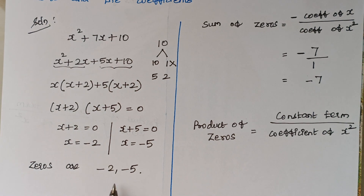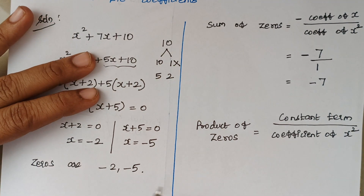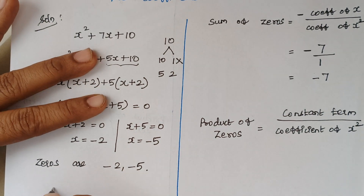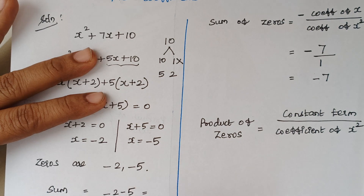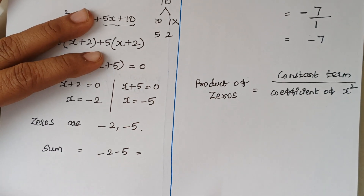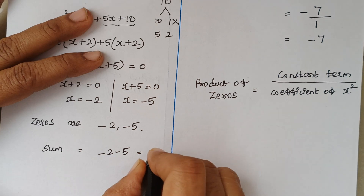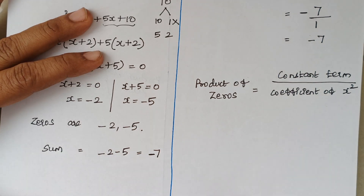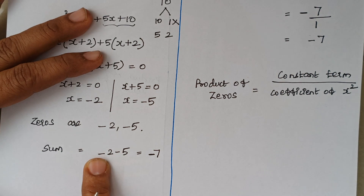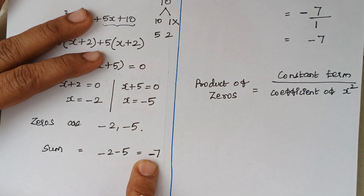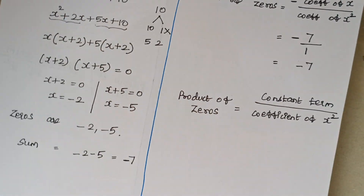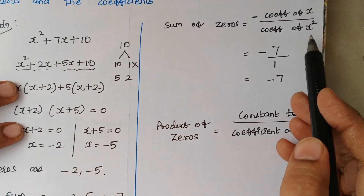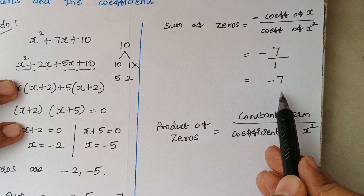The zero values are −2 and −5. Now calculating the actual sum of zeros: −2 + (−5). Both have the same sign, so 5 + 2 = 7 with a minus sign, giving sum = −7. The sum of zeros using the formula is also −7, so both are equal and verified.